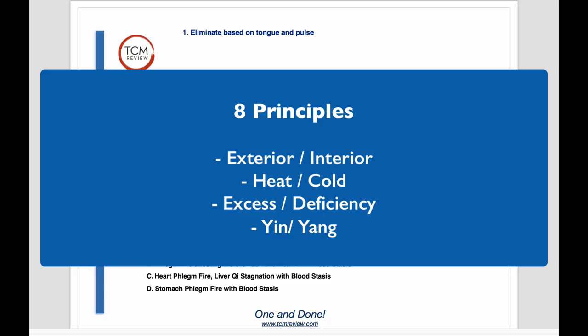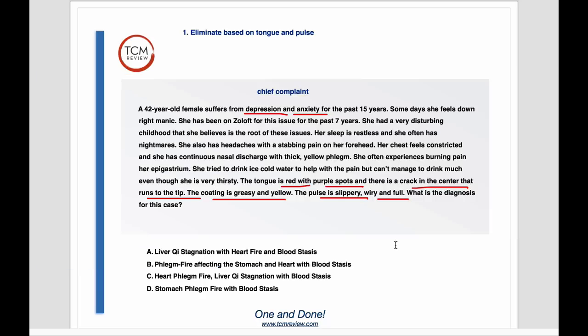To review our eight principles, we have exterior, interior, heat and cold, excess and deficiency, yin and yang. Yin and yang we're not going to use because they are relative terms — not helpful for diagnosing. The other three categories are great. Interior and exterior: most cases are going to be interior. When it's exterior, you're looking for fever and chills and possibly a superficial pulse, but not always. So basically we're looking at four of the eight principles: excess/deficiency and heat or cold. With this tongue, it's red — red tells us heat. It doesn't tell us excess or deficiency because a yin deficiency tongue can also be red, and a full heat tongue will also be red.